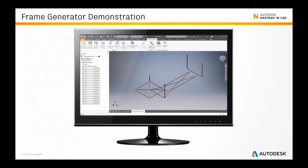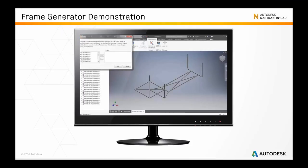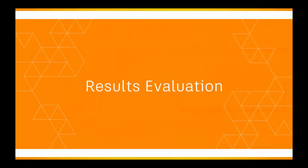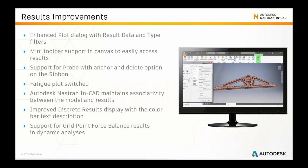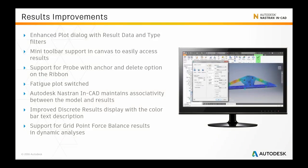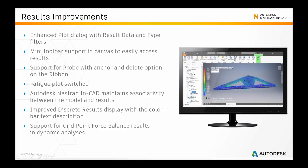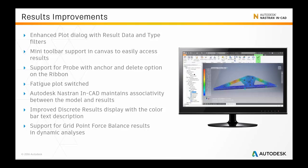Going back to the presentation: we covered results evaluation — the mini toolbar, enhanced plot dialog, the changes to probes allowing you to anchor and delete them. The fatigue plot colour gradient has also been switched: previously red indicated high fatigue life and blue indicated low fatigue life, but now red indicates low fatigue life and blue indicates high fatigue life. There are also a number of other incremental improvements to working with results in the post-processing stage.